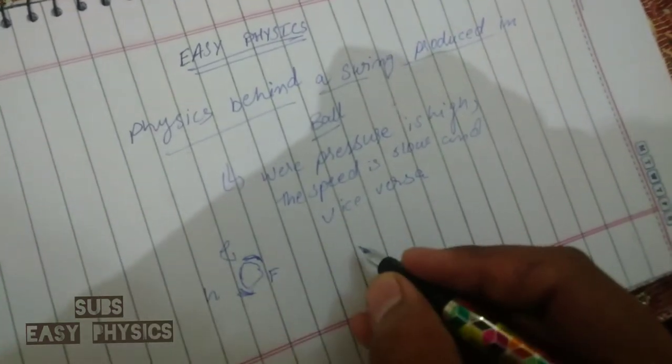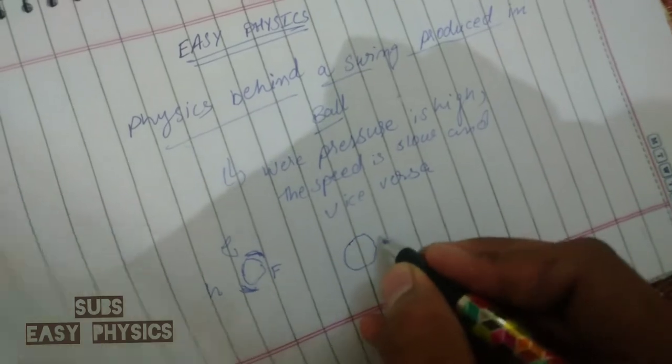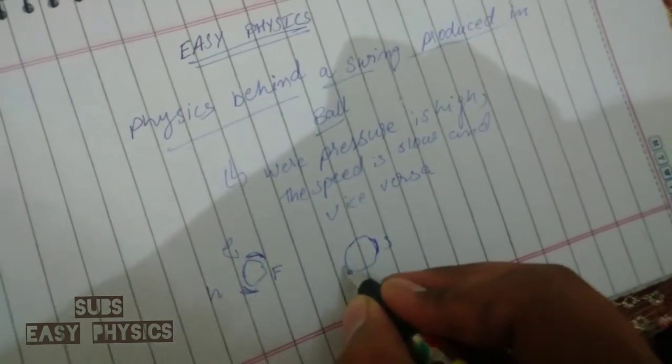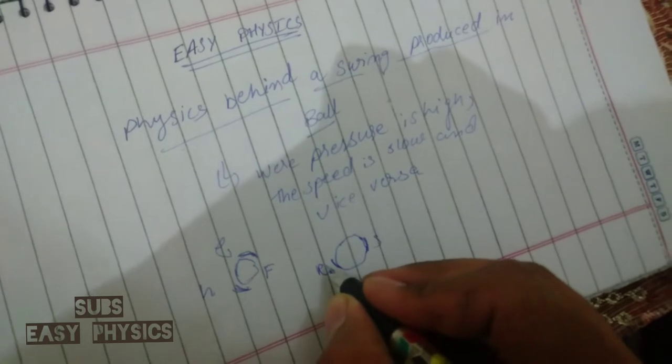I will explain it again. Let us consider this is a ball. This is the shining surface and this is the rough surface.